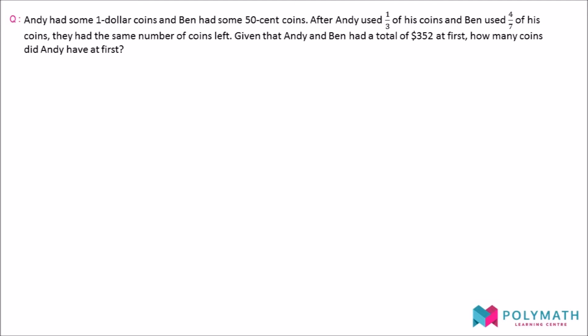Given that Andy and Ben had a total of $352 at first, how many coins did Andy have at first?